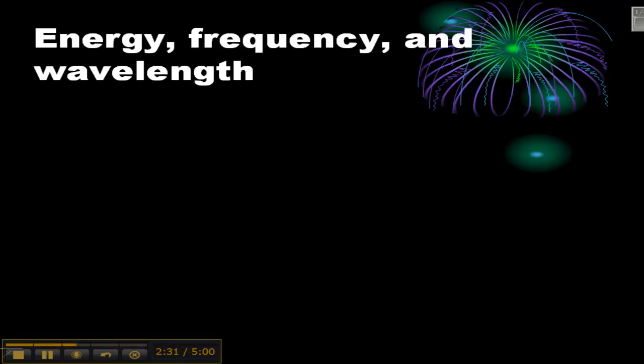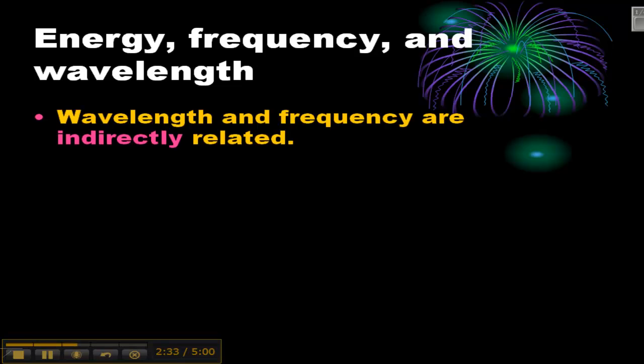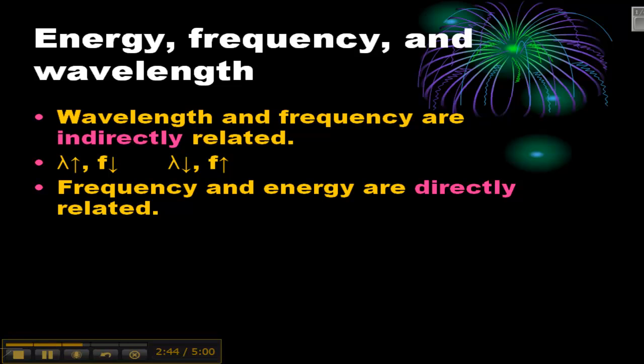So just to sum up another way, energy, frequency, and wavelength. Wavelength and frequency are what we call indirectly related. That means if one goes up, the other goes down. Remember this little symbol here means wavelength. Frequency and energy are directly related, which means they both do the same thing. If the frequency increases, the energy increases, and vice versa.